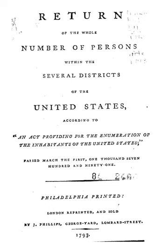Although the census was proved statistically factual based on data collected, the records for several states — including Delaware, Georgia, New Jersey, and Virginia — were lost sometime between 1790 and 1830. Almost one-third of the original census data have been lost or destroyed since their original documentation.